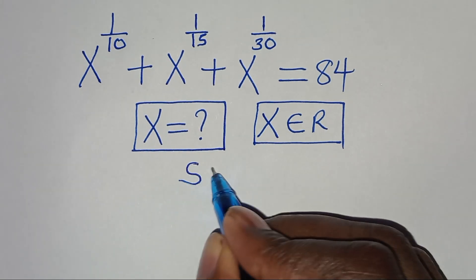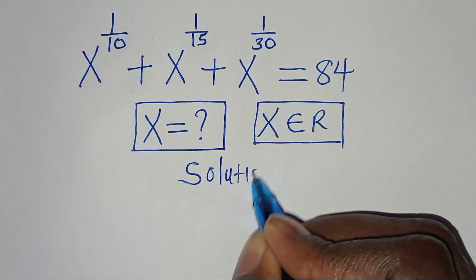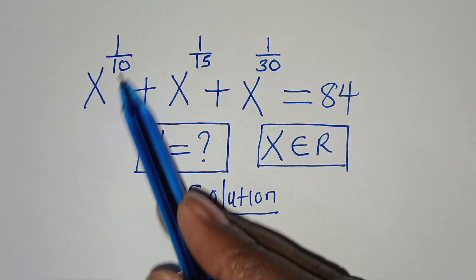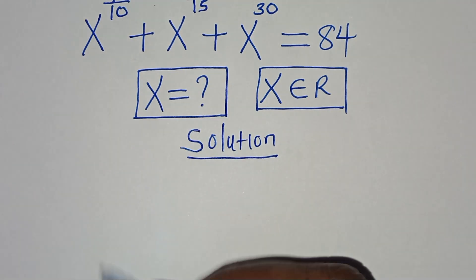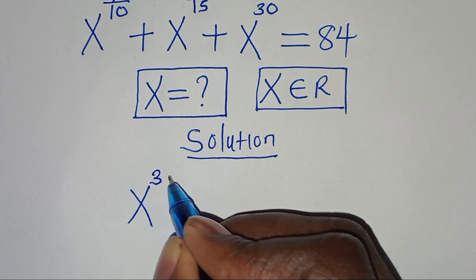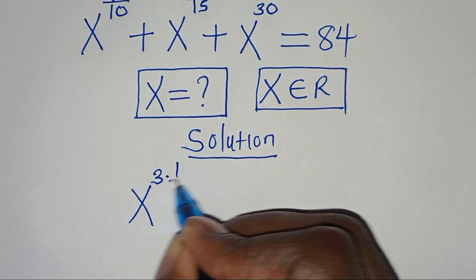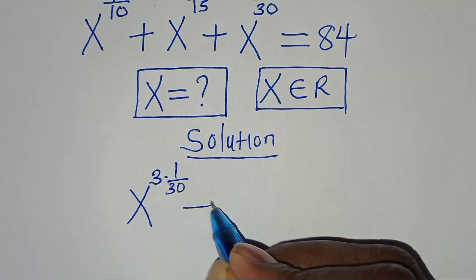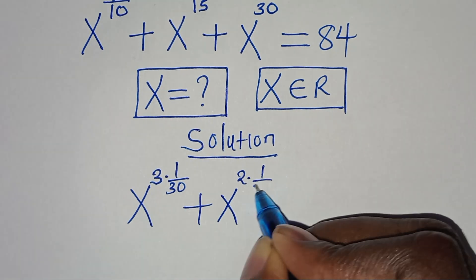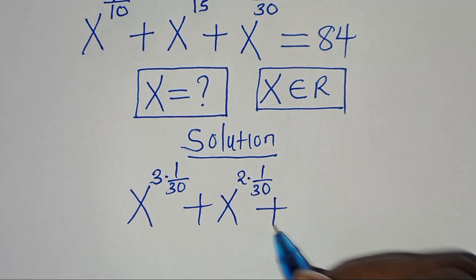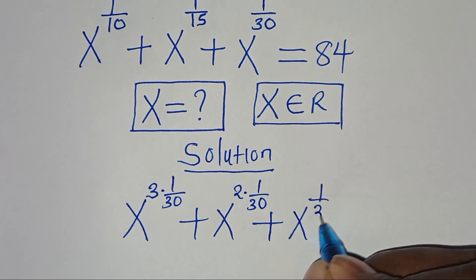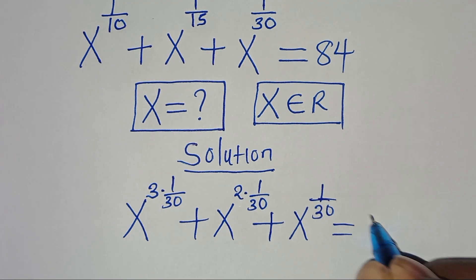Now let's provide a solution. We can express x to the power of 1 over 10 as x to the power of 3 multiplied by 1 over 30, then plus x to the power of 2 multiplied by 1 over 30, then plus x to the power of 1 over 30. This is equal to 84.